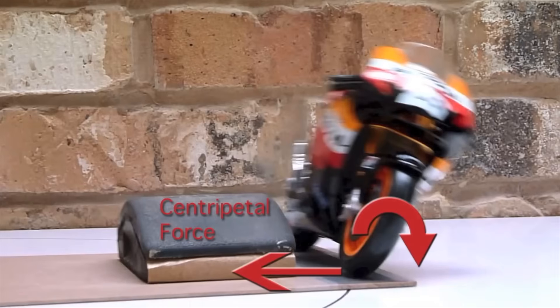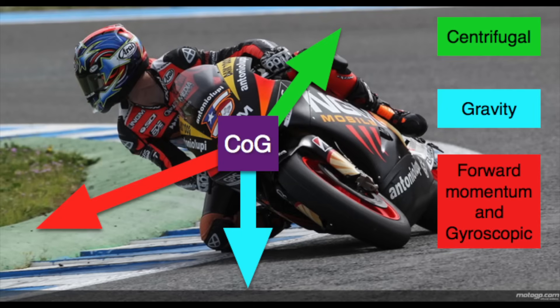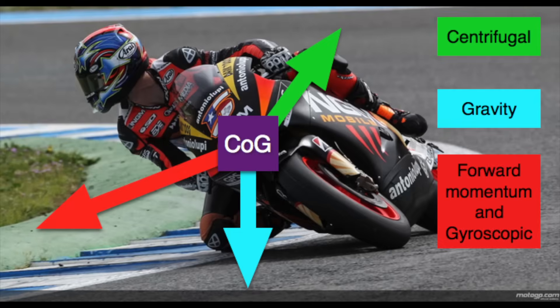Once we increase our speed, torque increases and counterbalancing with our bodies alone is no longer enough to equalize all these forces. This is why we lean the motorcycle — we need to change the location of the center of gravity in order to negate the centrifugal force pushing the motorcycle out of the turn.